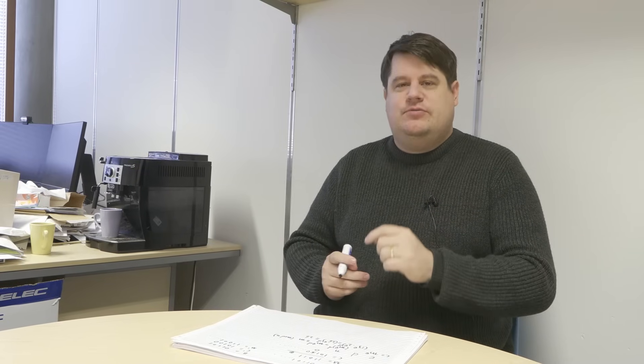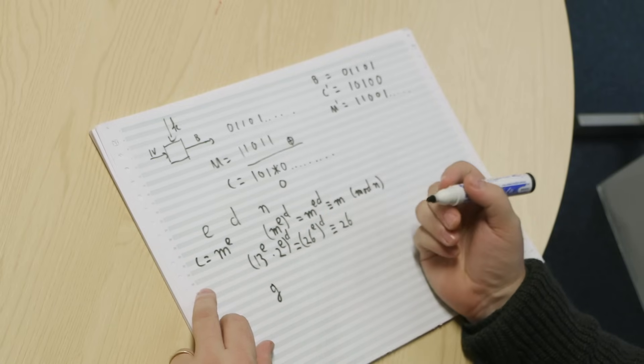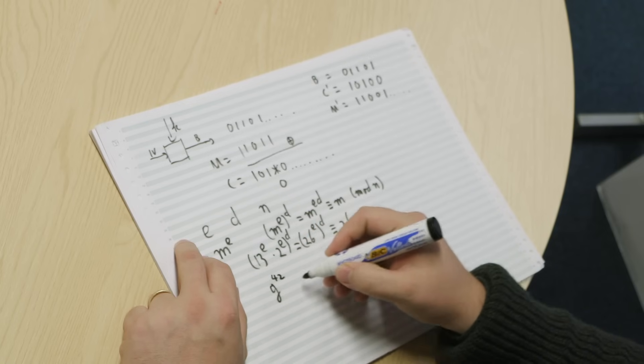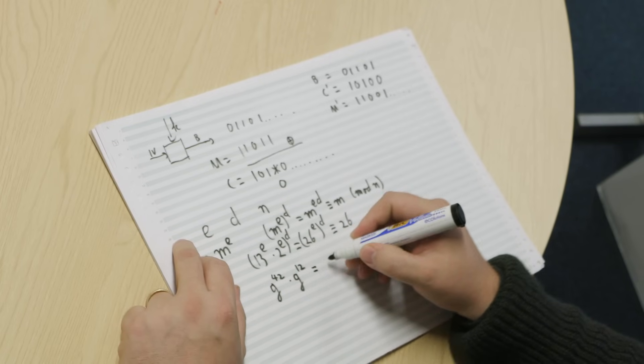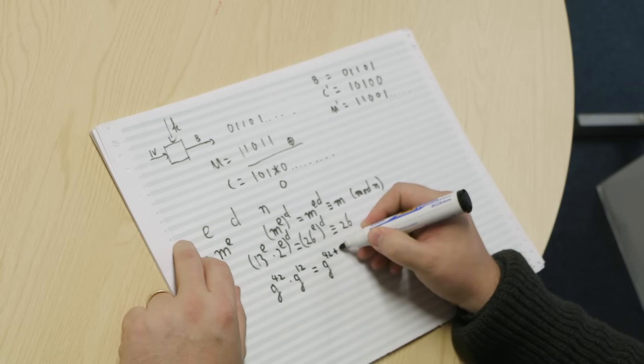So what can we use this for? We've got multiplicative homomorphic encryption. We can multiply ciphertexts. Now, I would like to convince you that multiplication and addition are actually kind of the same. So if I have a ciphertext, some random number, let's call it G, and I raise it to a power of a chosen number. Give me a number. 42. And I multiply that with G to the power of yet another number. 12. If I multiply these two numbers together, what I get is G to the power of 42 plus 12. 54. Now, that means that we can translate multiplication into addition.